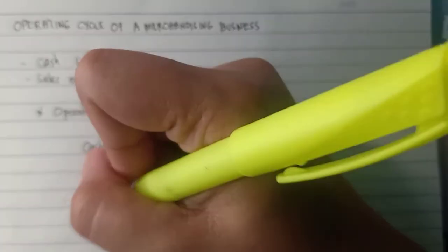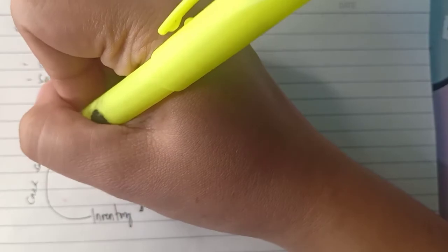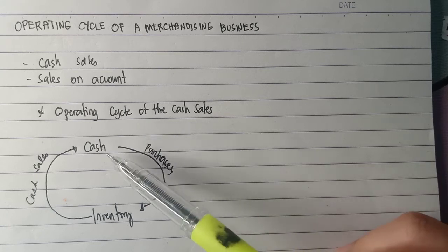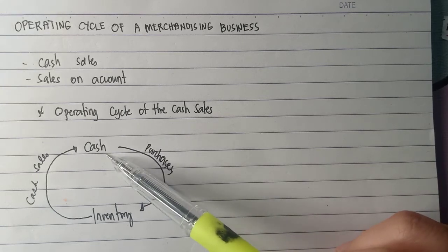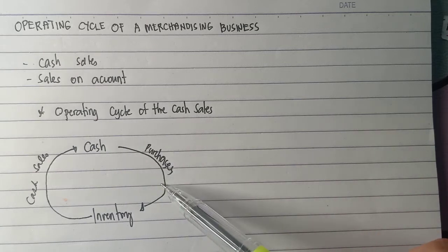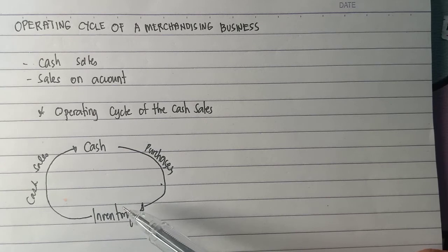After that, if we sell our inventory for cash, it will go back to cash. So this is called the cash sales. In the operating cycle of cash sales, the first step is cash; then by purchasing inventory, the cash is converted into inventory; and after that, if we sell the products, there is a cash sale.